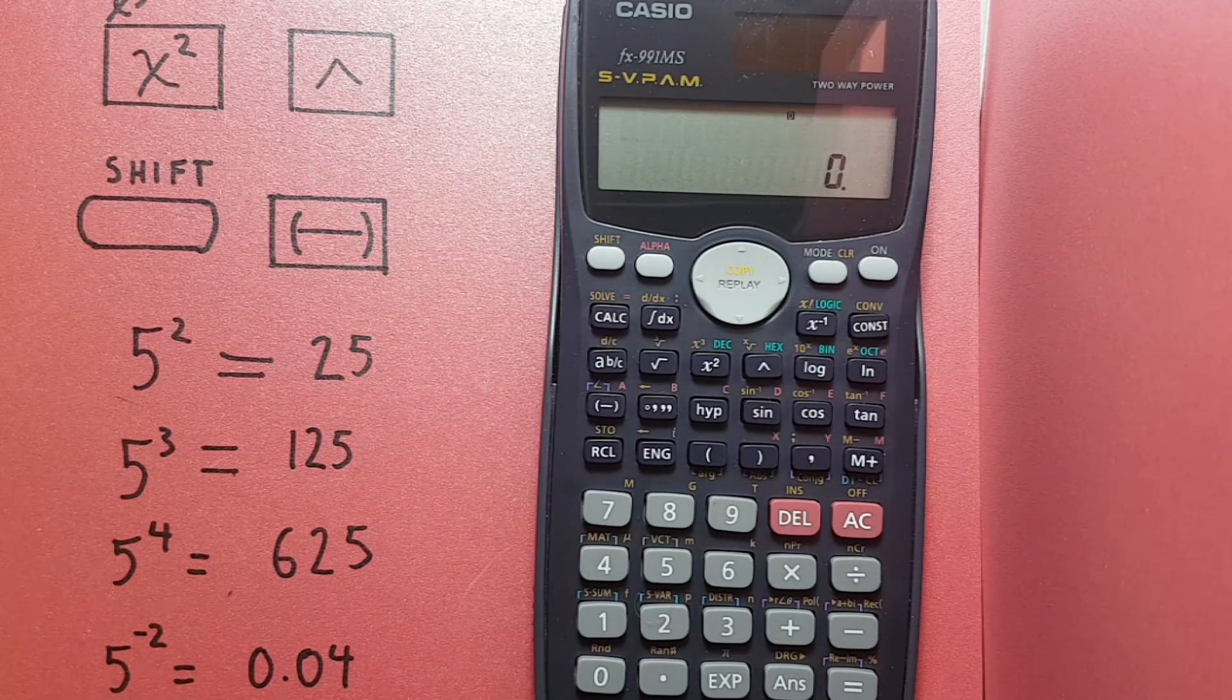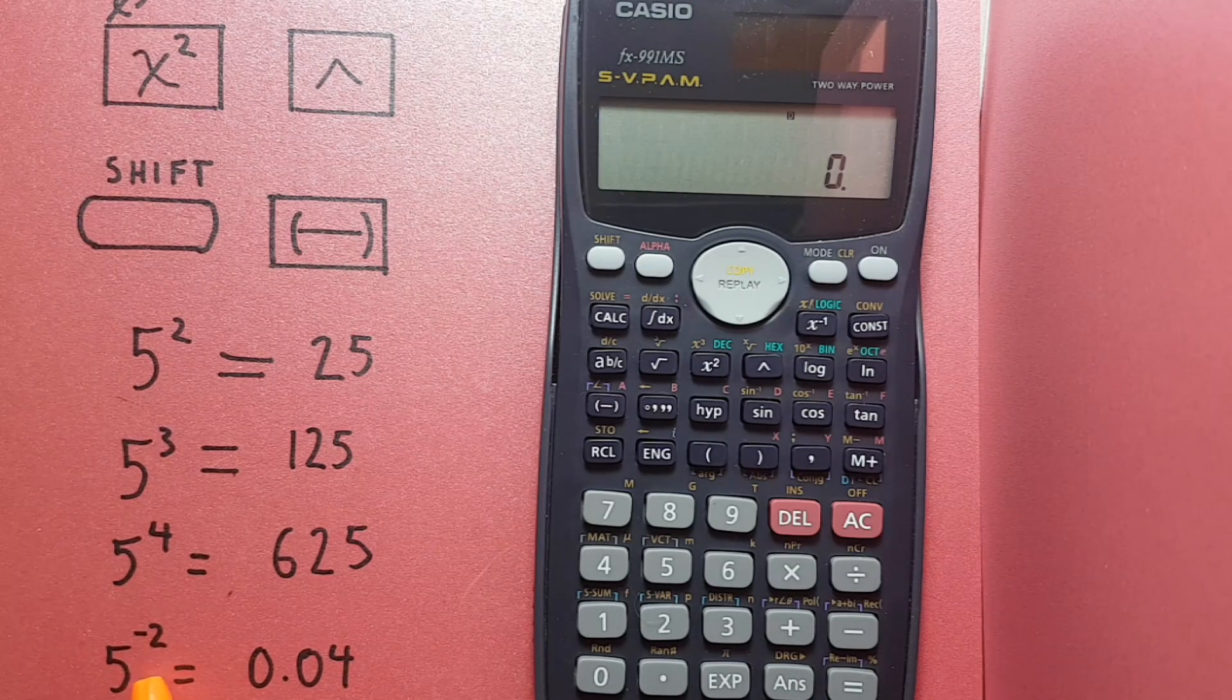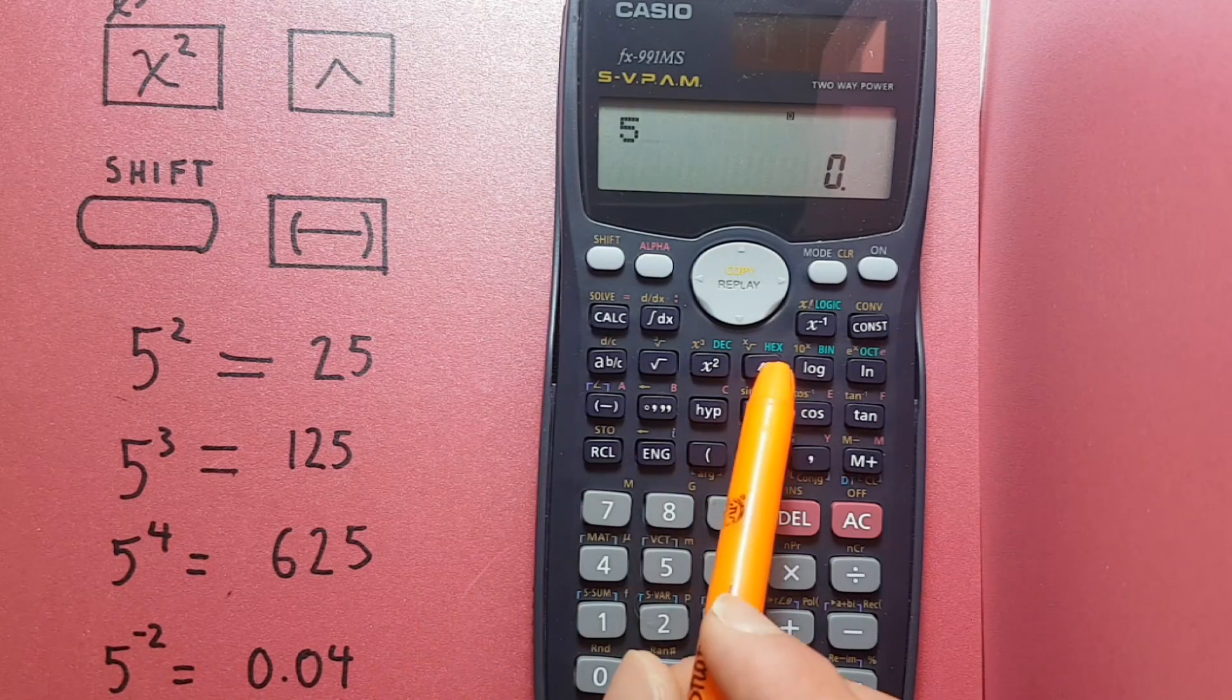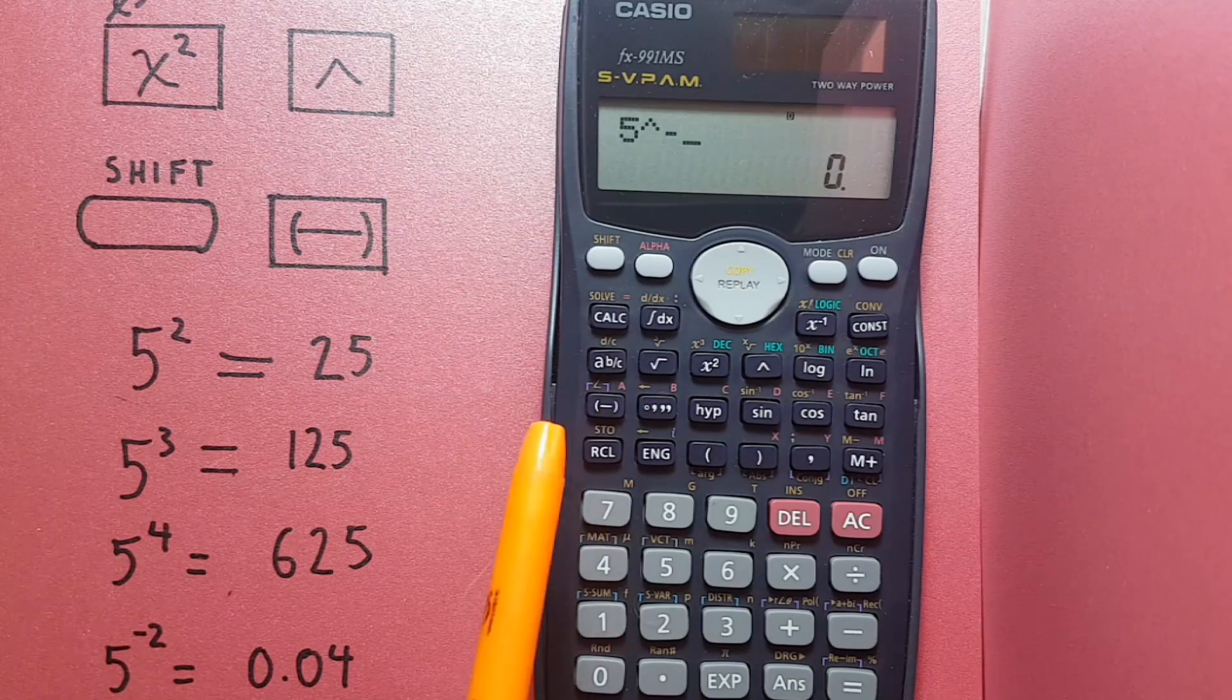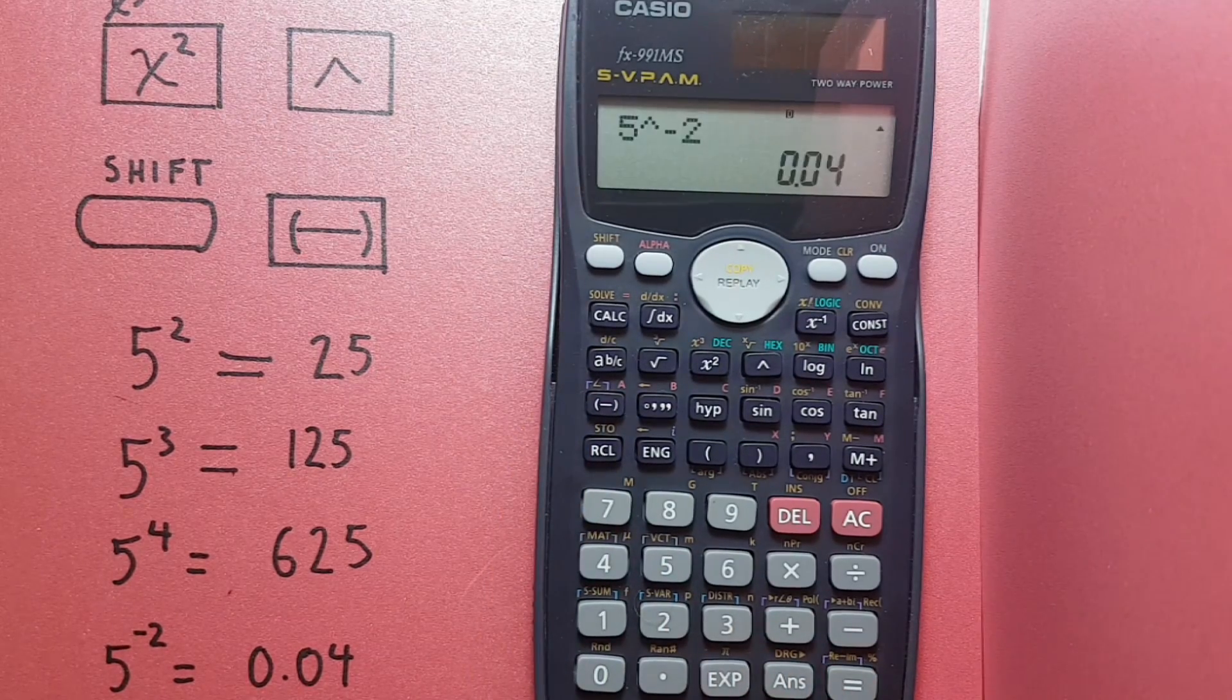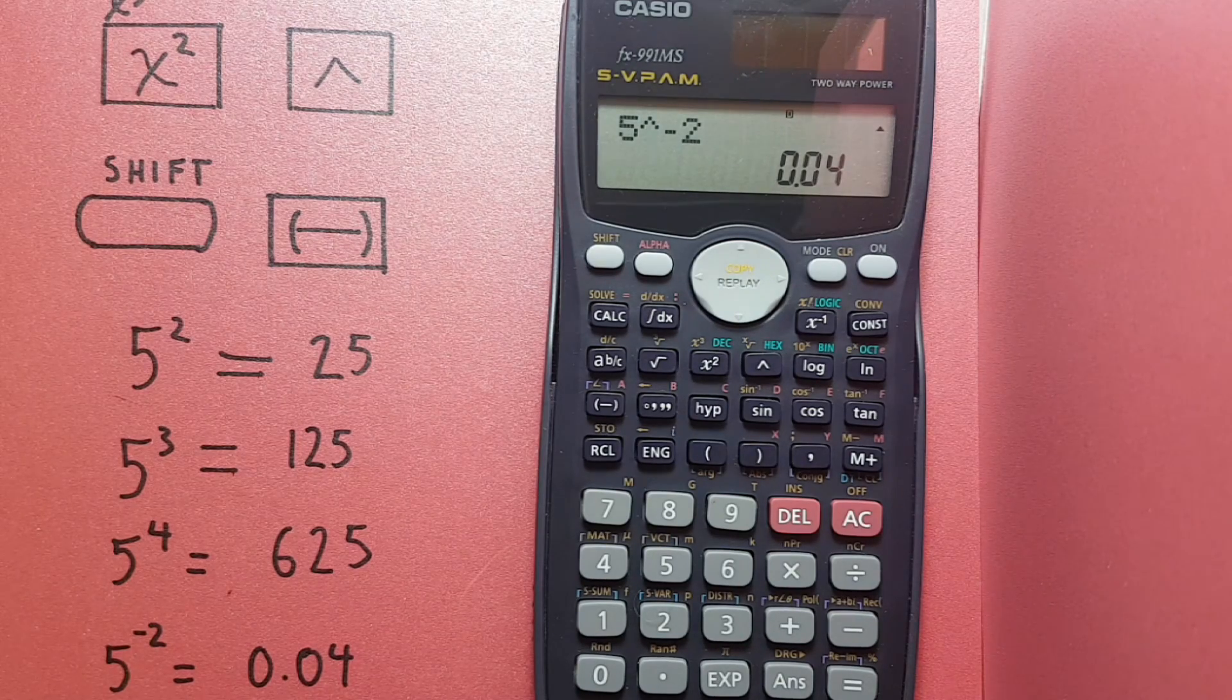This also works for negative exponents. So if we wanted to do 5 to the power of negative 2, we would press 5, up arrow, and then the negative button located here, and then the 2 and equals. Which gives us 0.04, which is the correct answer.